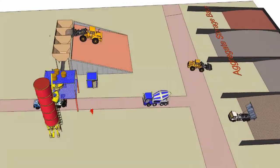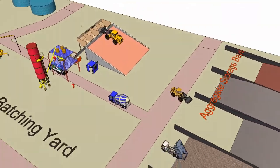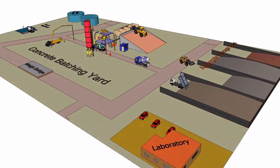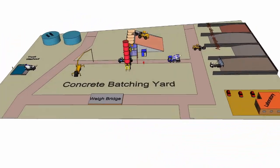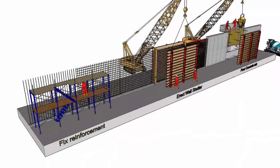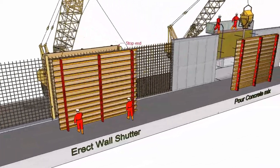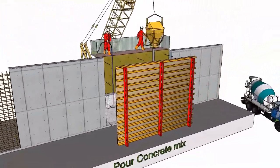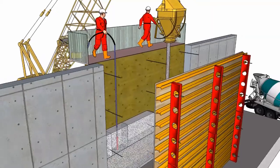Concrete batching plant yard. Reinforced concrete wall — shown is the construction sequence.